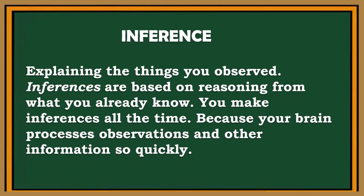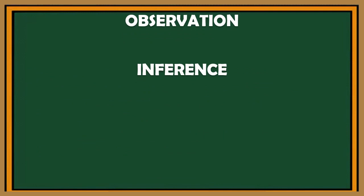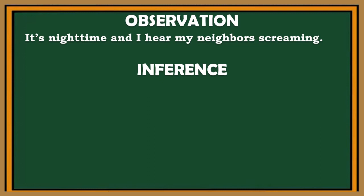When you are making inferences, you are explaining the things you observe. Inferences are based on reasoning from what you already know. You make inferences all the time because your brain processes observations and other information so quickly. Let us give an example of observation and inference and try to find out how the two differs. For example, it's night time and I hear my neighbors screaming. Notice in this statement that you are only telling what you are seeing and what you are hearing. But what if you try to explain your observation? Then you are already making an inference.